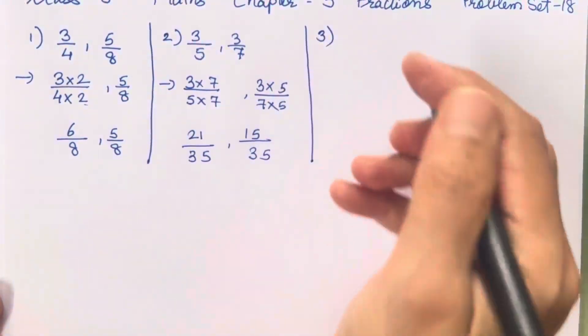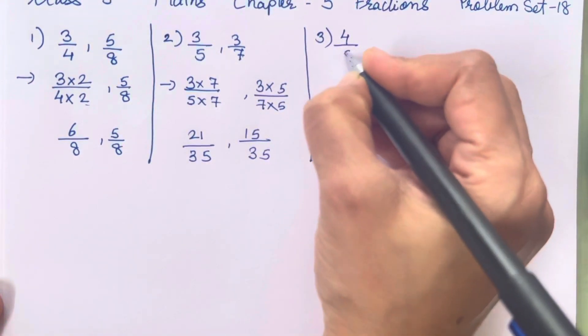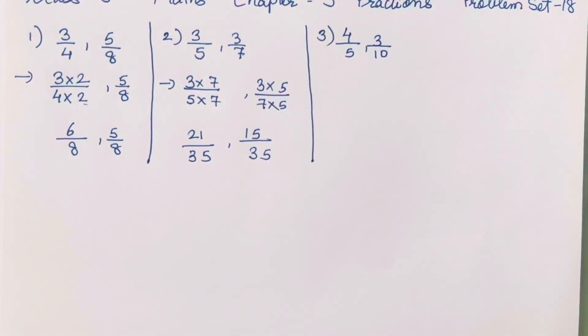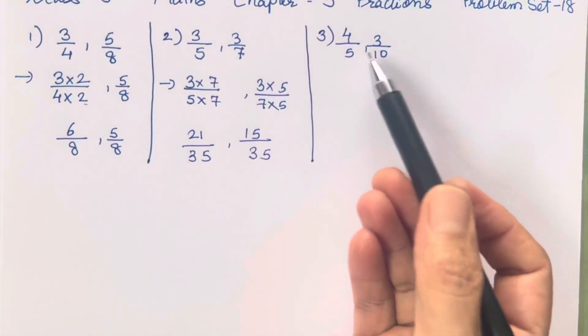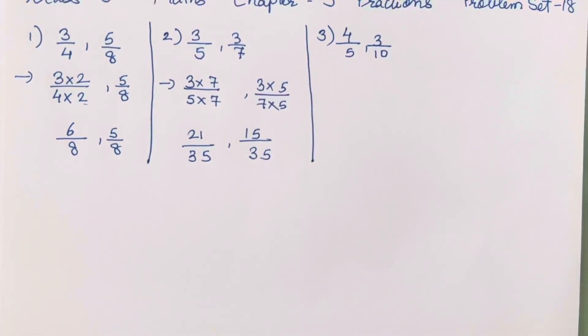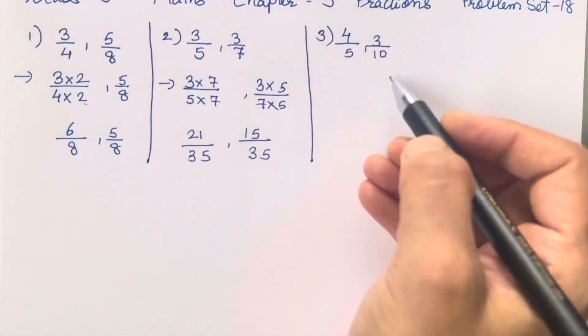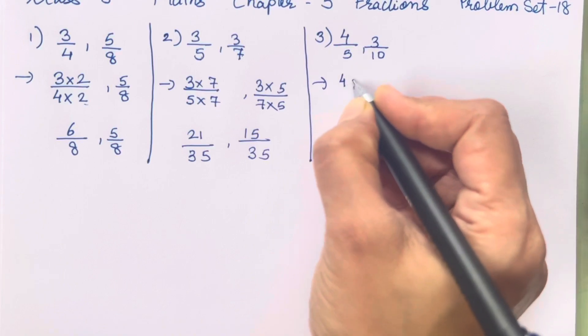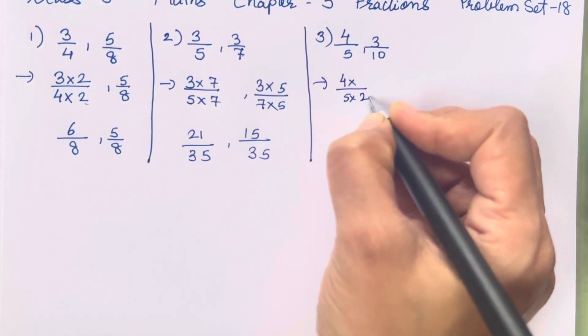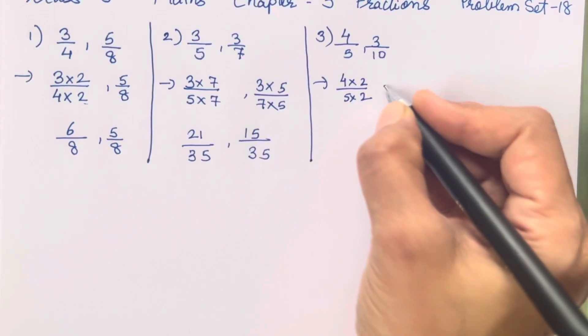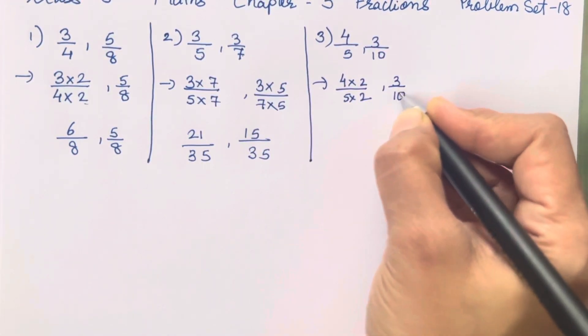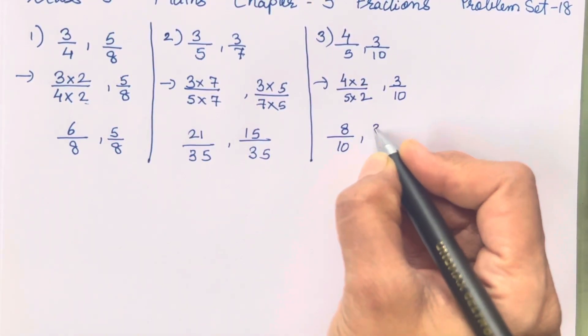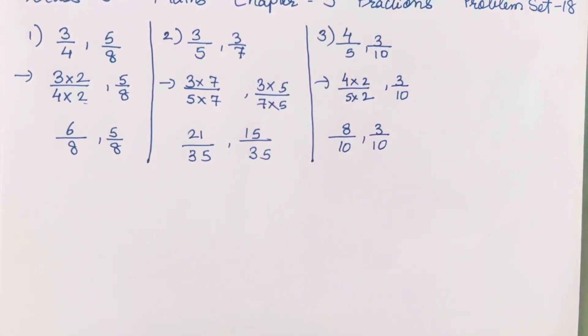Next is the third one, that is 4 upon 5 and 3 upon 10. Now while seeing over here you all can judge that 5 ki table me 10 aata hai, isn't it? 5 2s are 10. So what we will do is we will keep this side same but change this side, that is 4 multiplied with 2 and 5 multiplied with 2. This side we will keep it as it is. So 4 2s are 8, 5 2s are 10. So 3 upon 10 as it is.